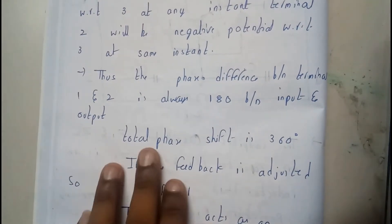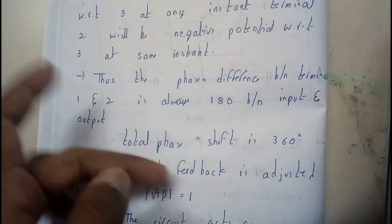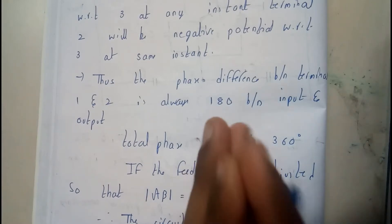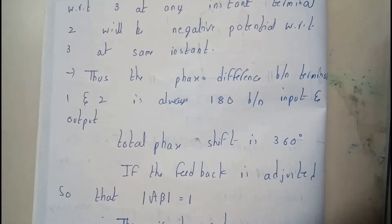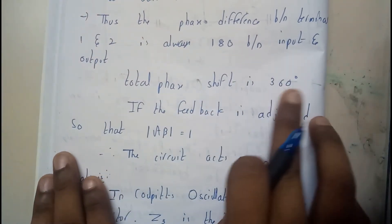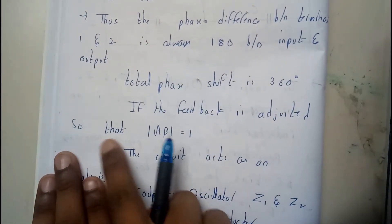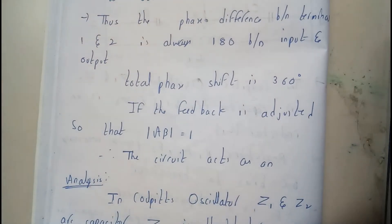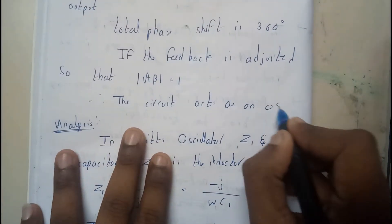So the total phase shift will be 360. 180 from the tank circuit and 180 from directly from the CE amplifier. So now we are done with the first one point. So now the next point will be if the feedback is adjusted so that A beta is equals to one, then the circuit acts as an oscillator.